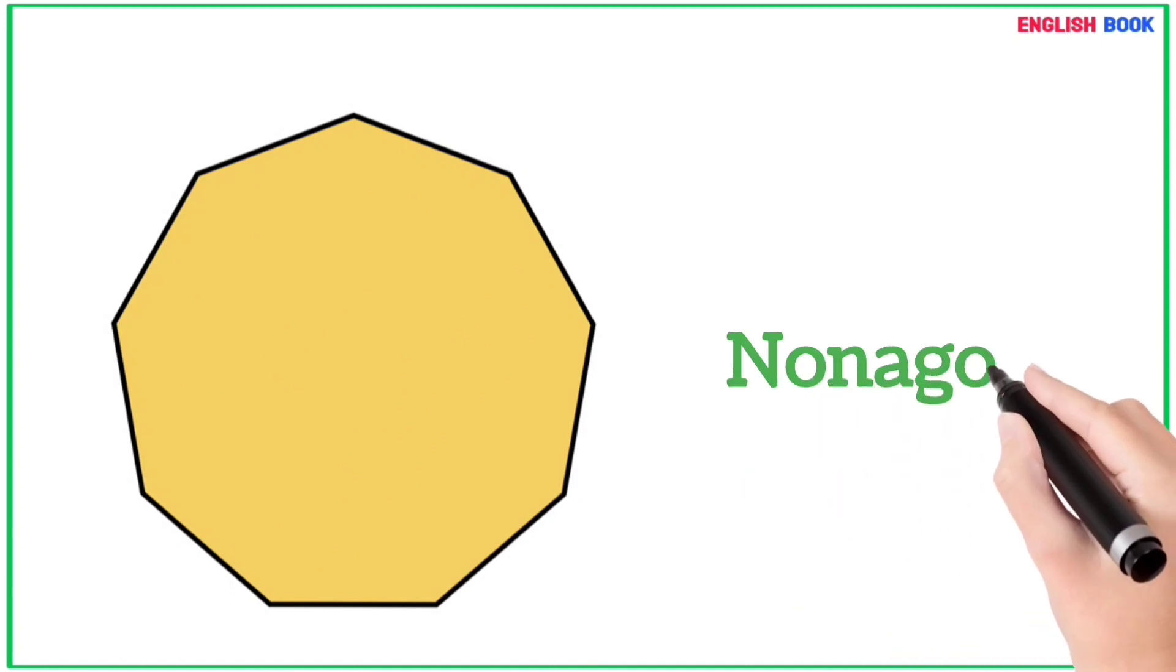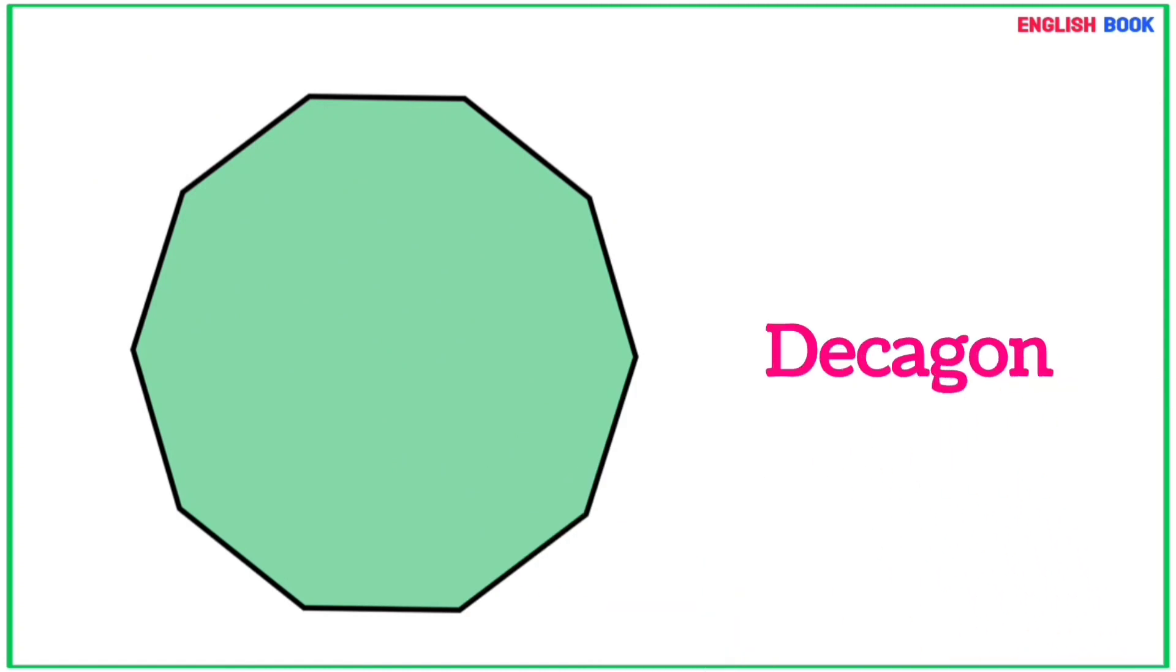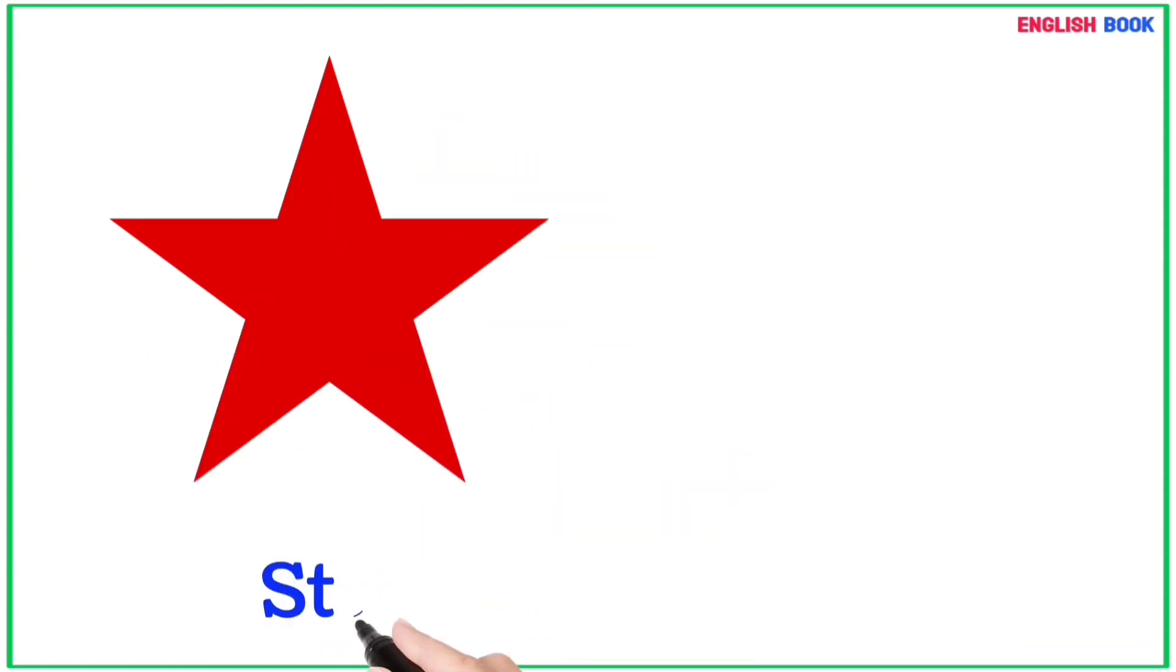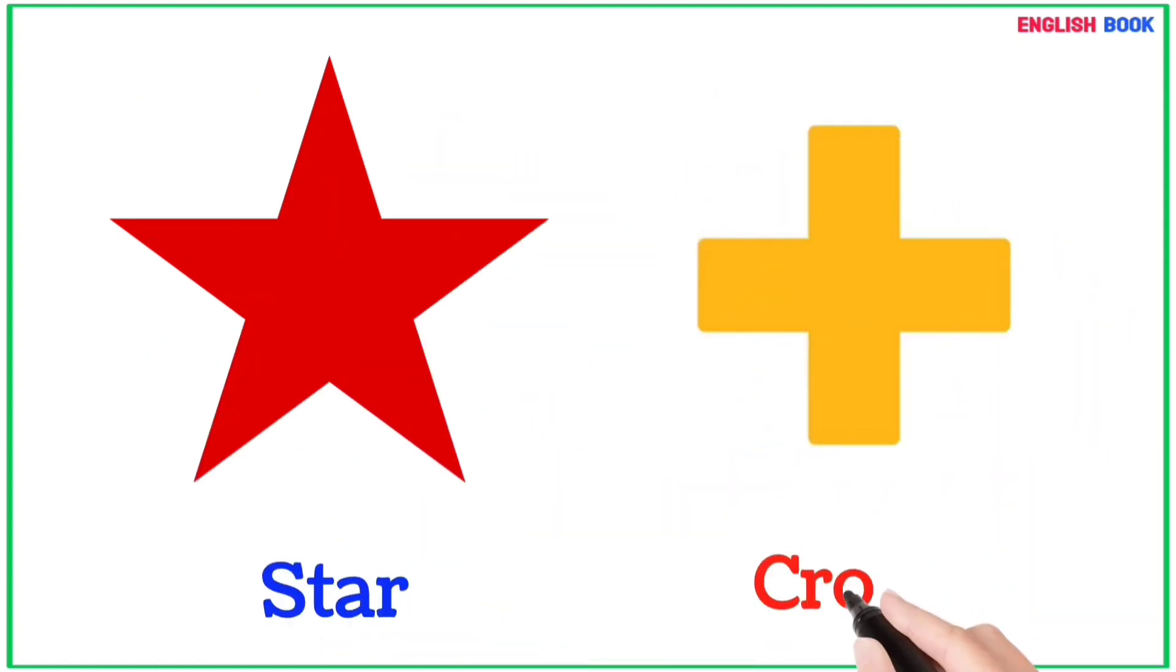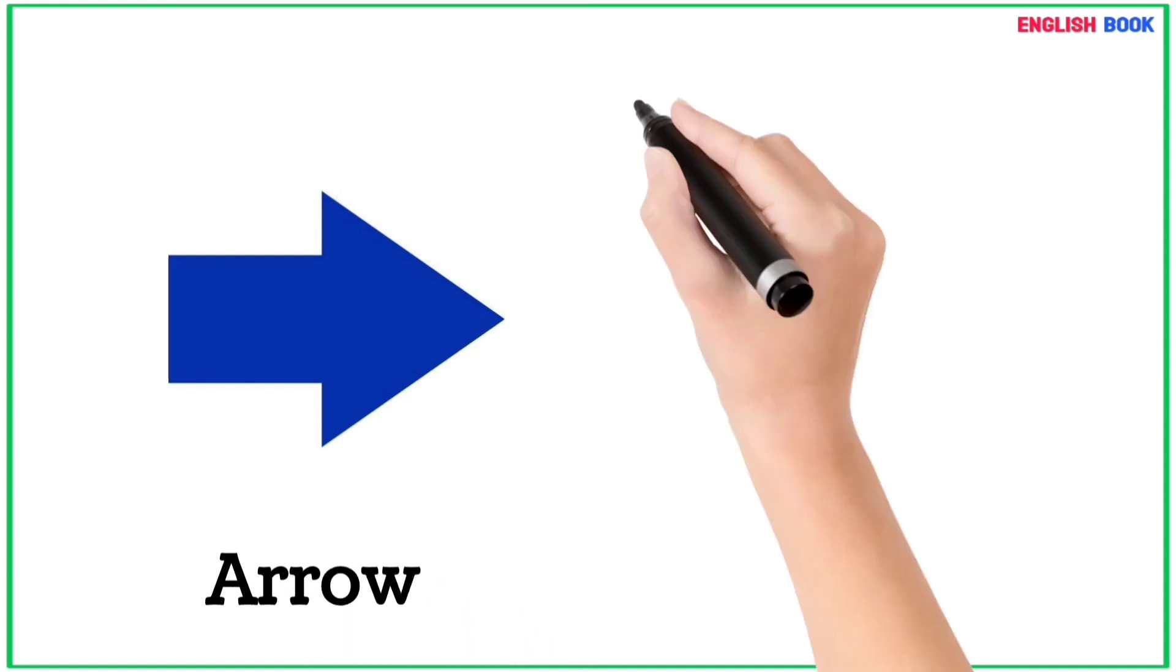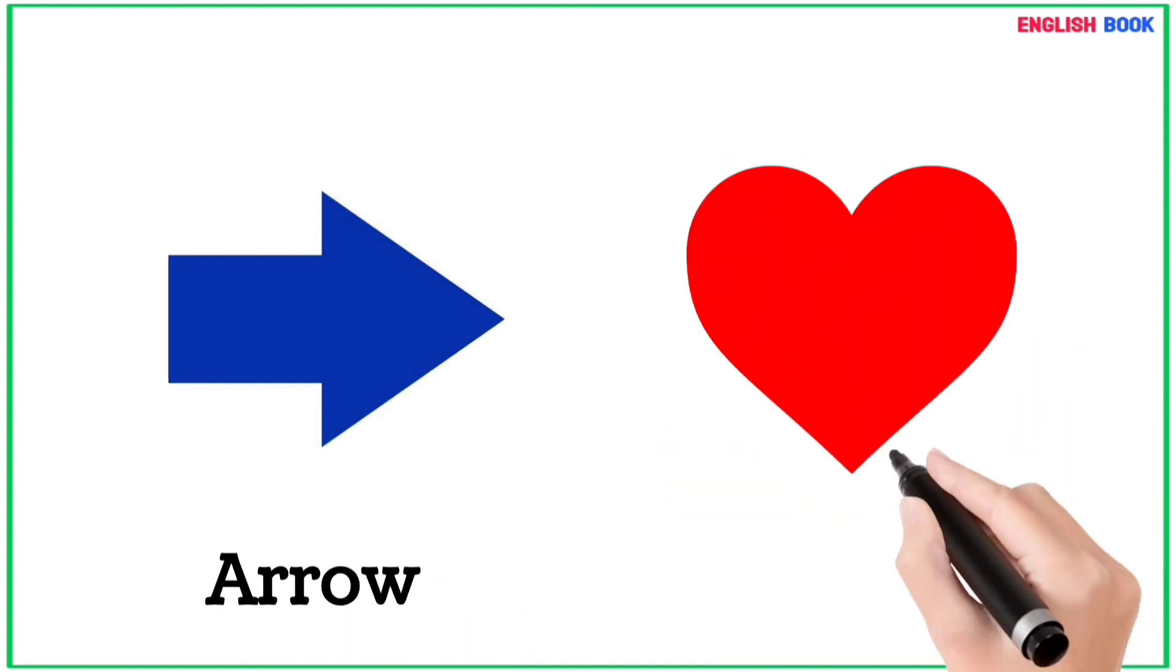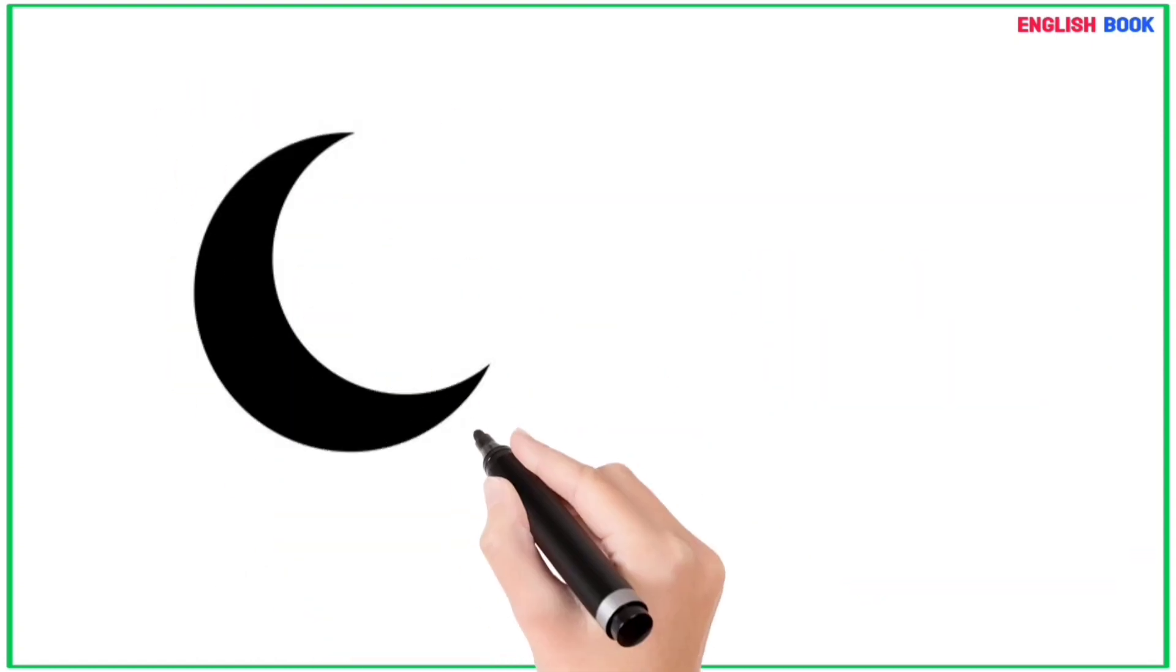Octagon. Nonagon. Decagon. Star, cross, arrow, and heart.